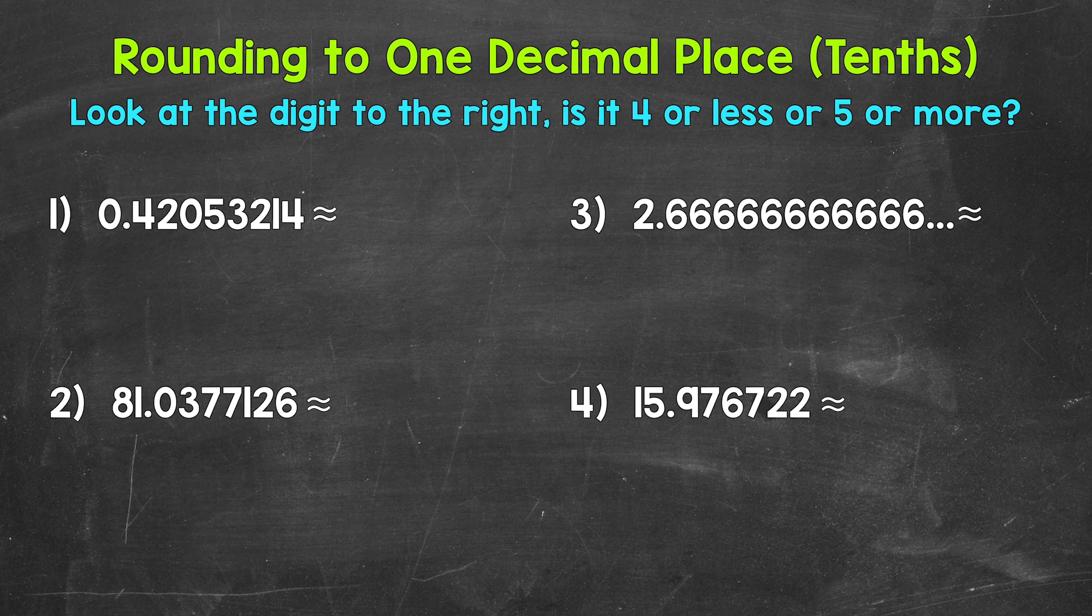We do this by taking a look at the digit in the tenths place, or whatever other place we want to round to, and then take a look at the digit to the right. That digit to the right tells us if we keep the digit the same, or if we round up. Four or less, keep the digit the same. Five or more, round up.